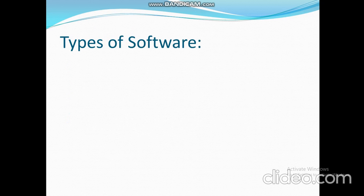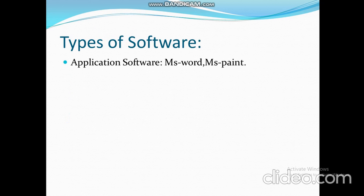Next are the types of software. Software is of two types. First is application software — it is a set of programs designed to perform a specific type of job, like MS Word, MS Paint, etc. Next is system software — it is a collection of one or more programs that controls and manages the overall operations and performance of a computer system. It acts as an interface between the user and the computer.